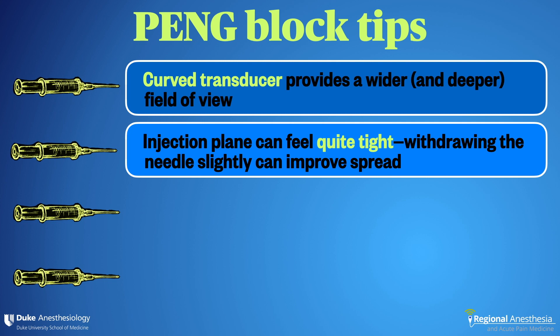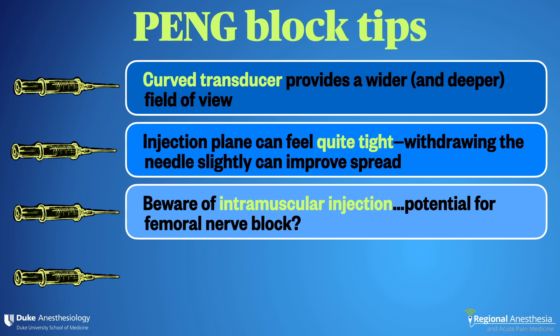Often when first attempting to inject, there can be a lot of resistance, and this can be due to the needle tip being tightly opposed to the periosteum or the psoas tendon. Withdrawing the needle very slightly often relieves this resistance and allows the injectate to flow under the muscle. Make sure the needle tip is truly deep to the muscle, as occasional reports of quad weakness following PANG block seem to correspond to an inadvertent intramuscular injection. This is another reason to use dilute local anesthetic, just in case some local ends up within the muscle itself.